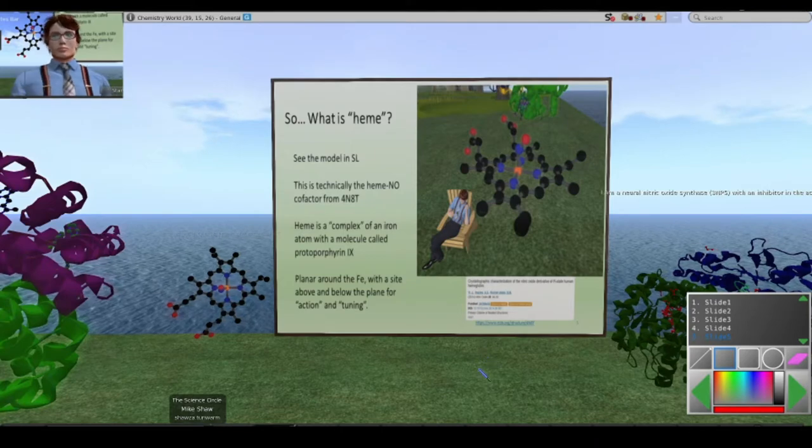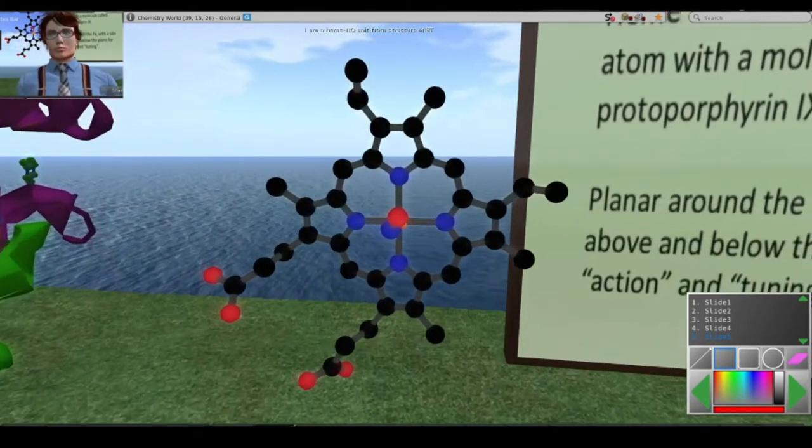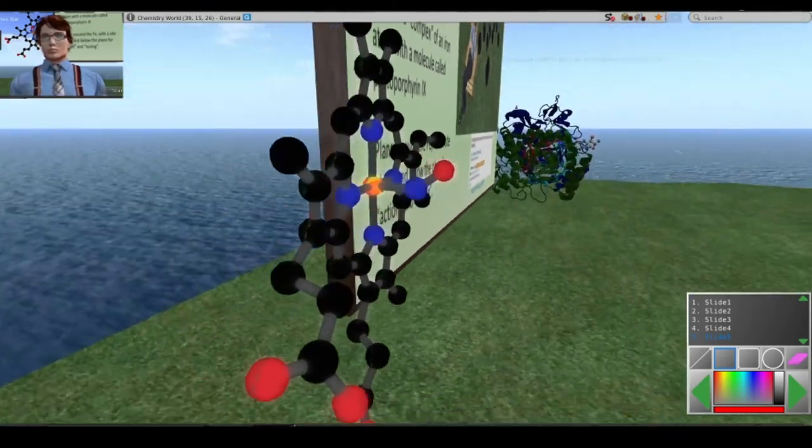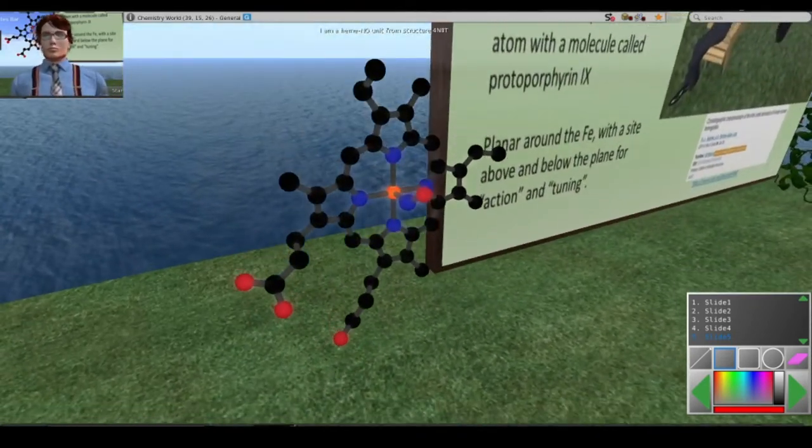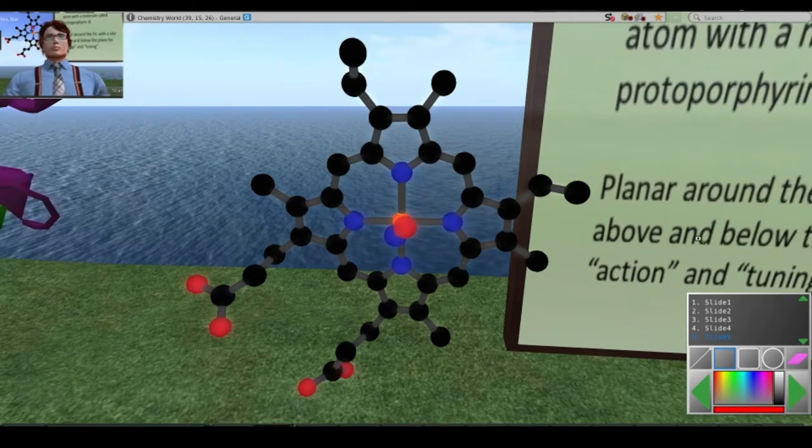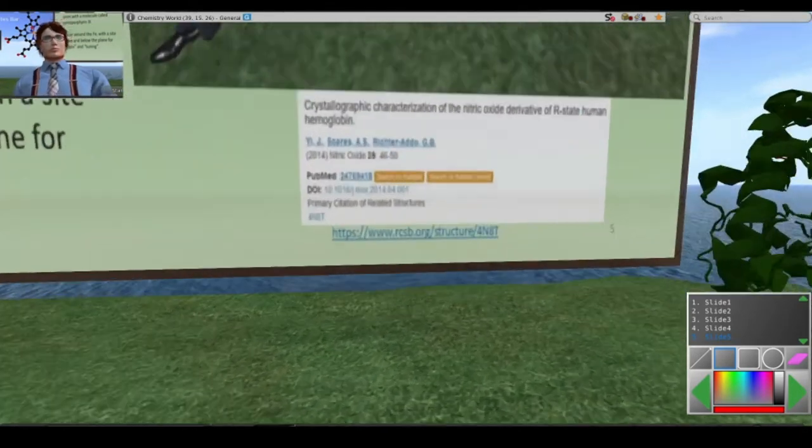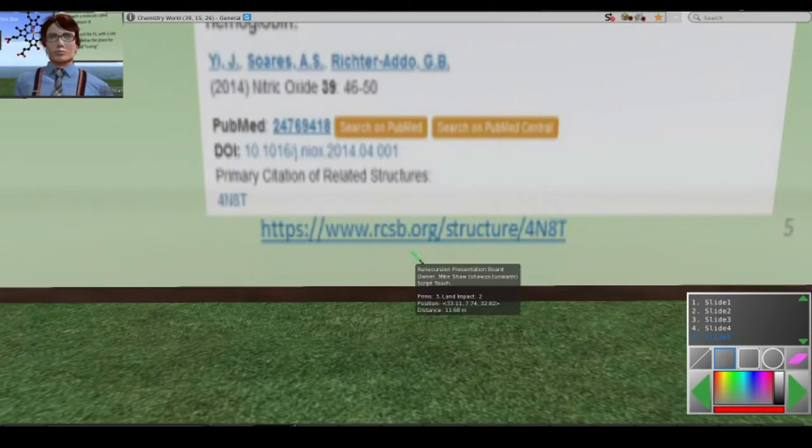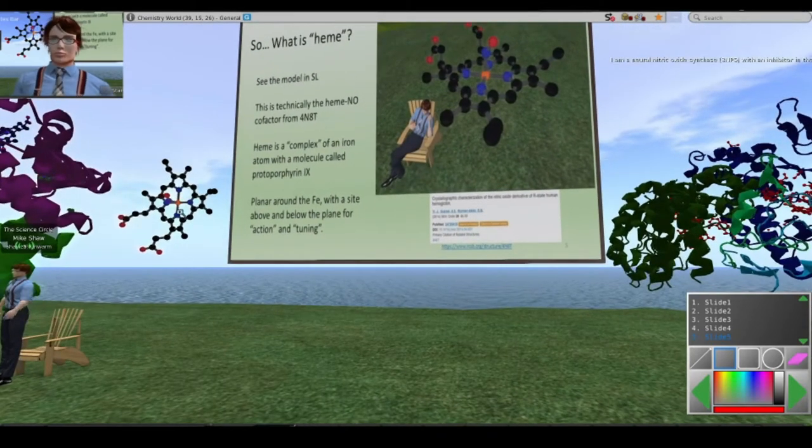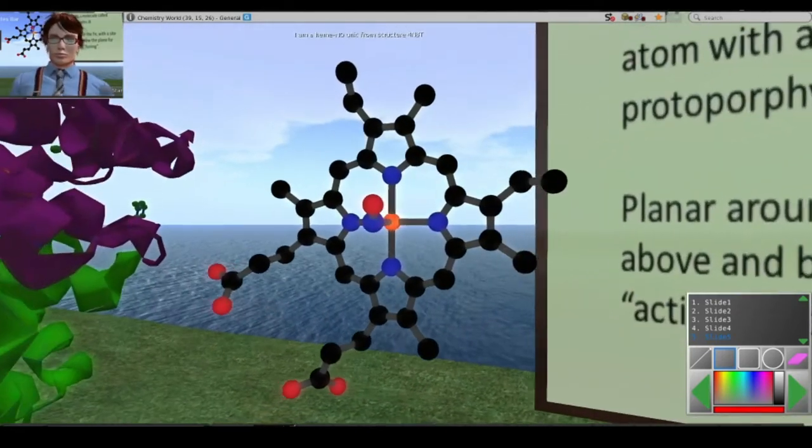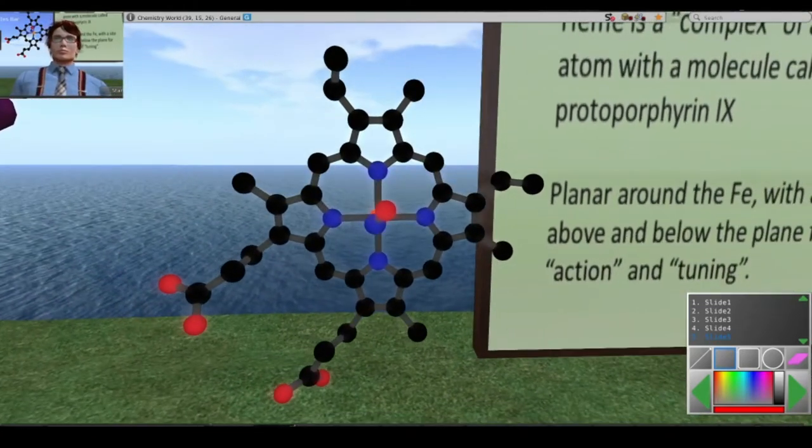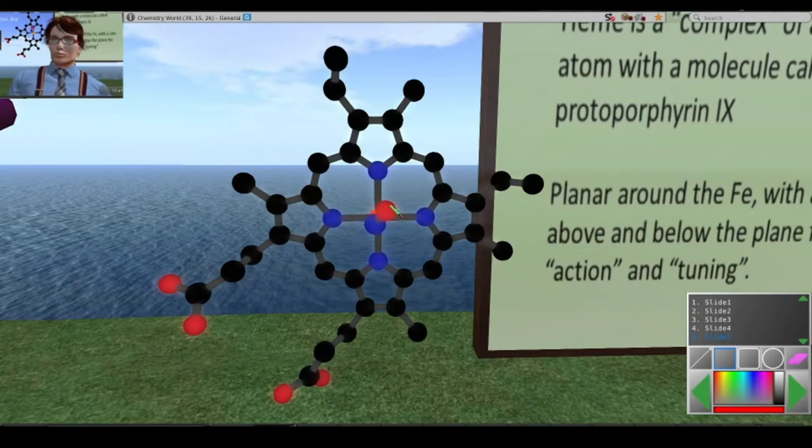So what is heme? Let me zoom in to a heme nitric oxide model. This is a model that I uploaded into Second Life based on x-ray crystallographic data that's available at the RCSB, rcsb.org. It's from structure 4N8T. Coincidentally, that's a structure that my collaborator George and his students published.